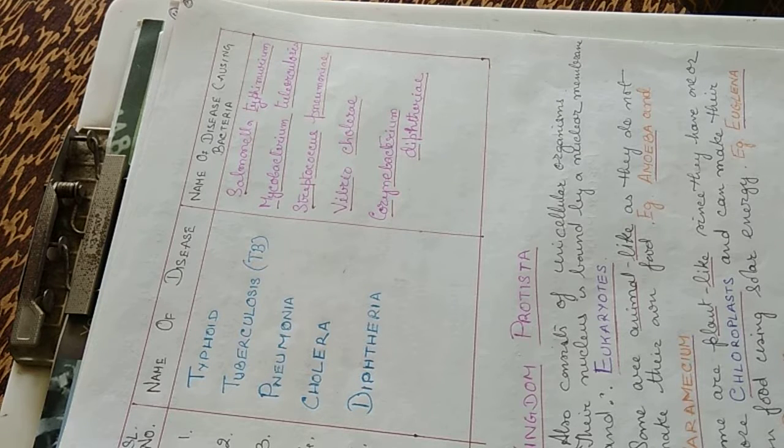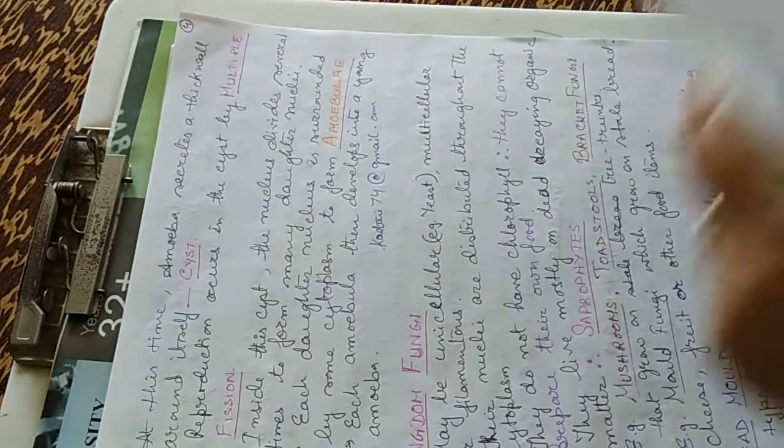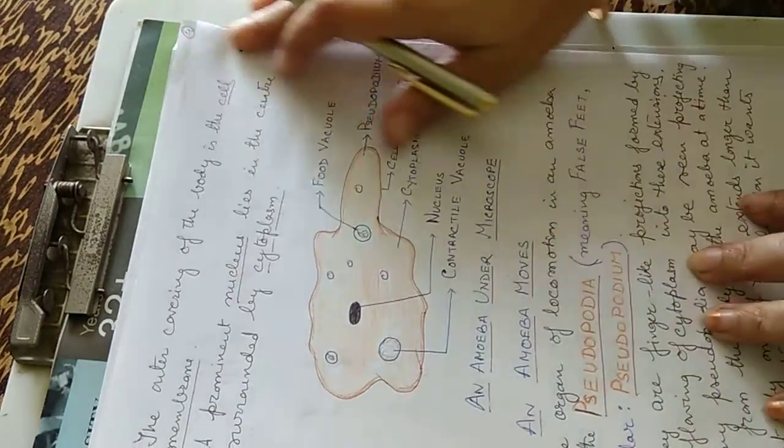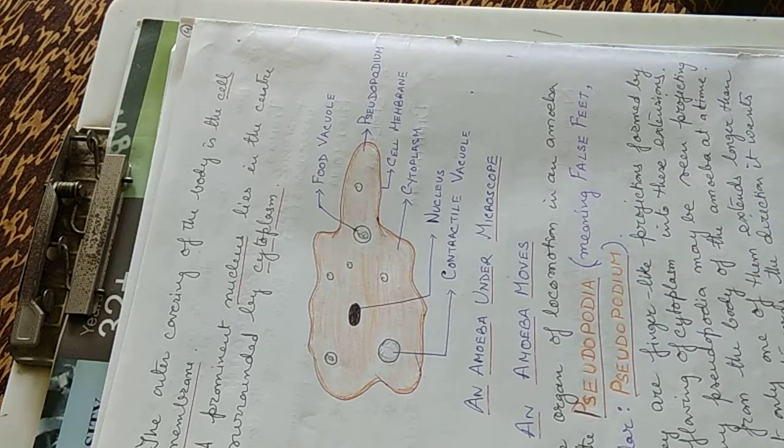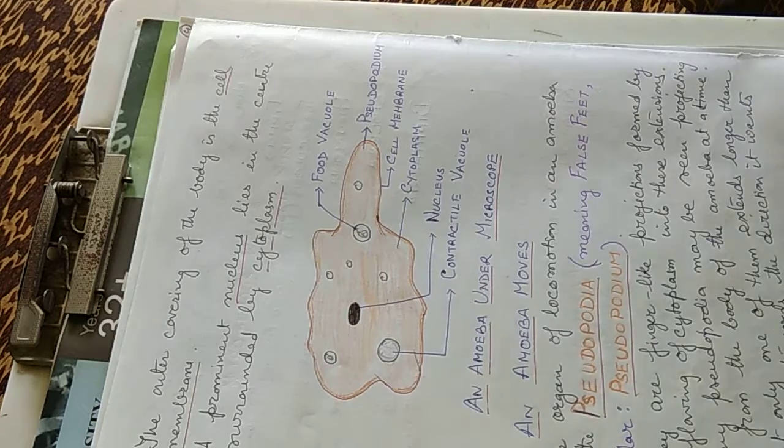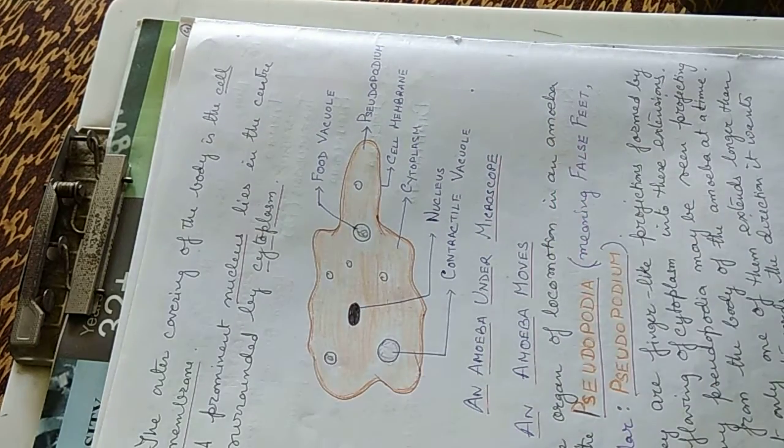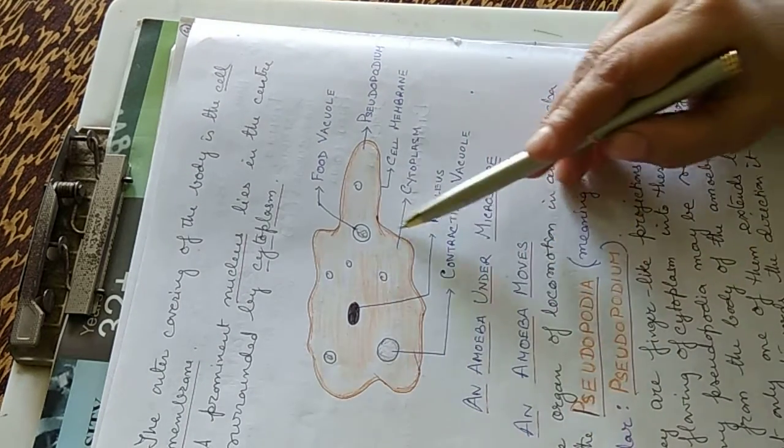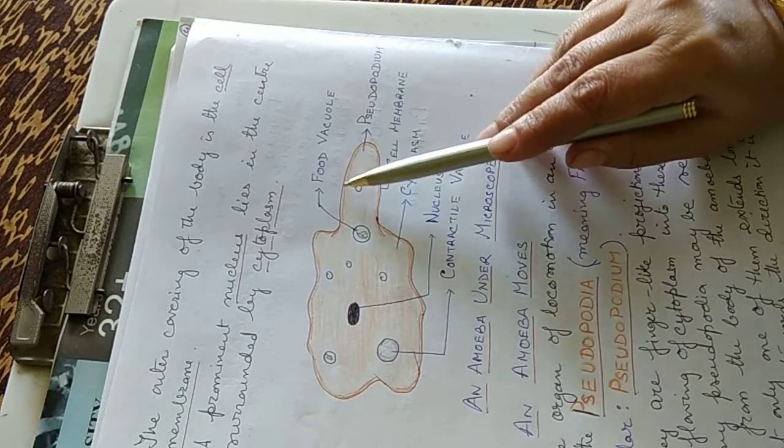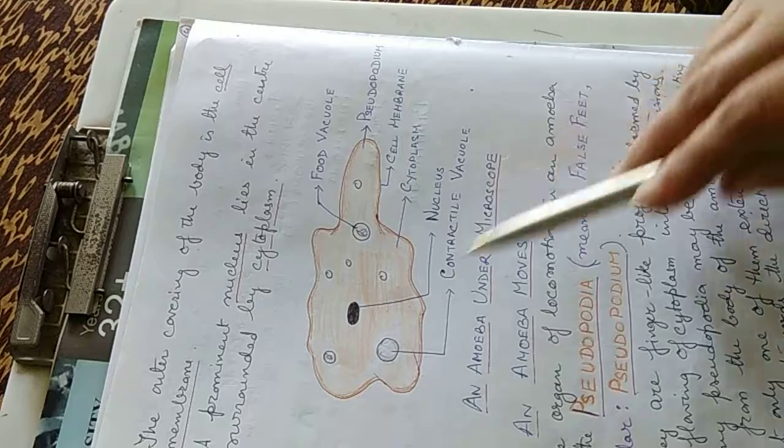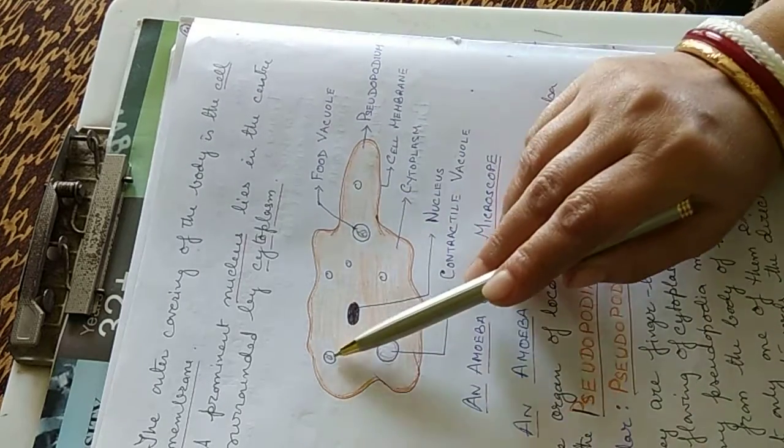Amoeba, one of the simplest animals made up of just one single cell, being so small it can be seen only under a microscope. They are found in ponds, ditches and other places with stagnating water. The body is irregular shaped. The outer covering of the body is the cell membrane. A prominent nucleus lies in the center surrounded by the cytoplasm. This is an amoeba structure which is found under microscope. We can see this is the cell membrane, this is the pseudopodia, false foot, this is the cytoplasm, this is the nucleus and these are the food vacuoles and these are contractile vacuoles.